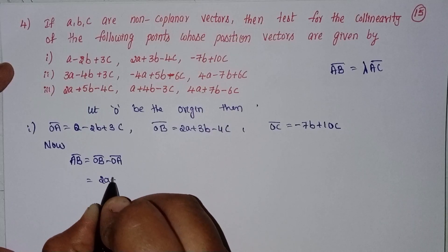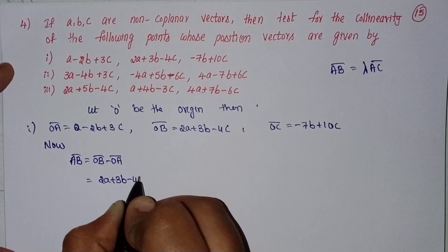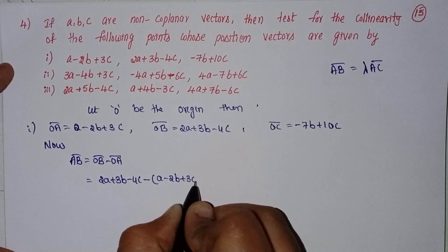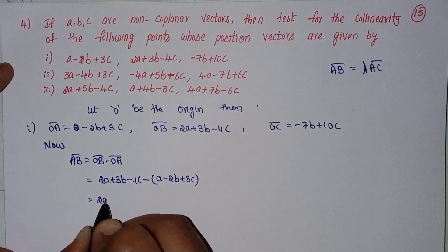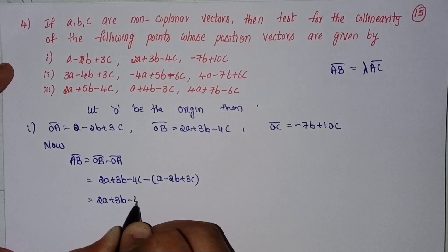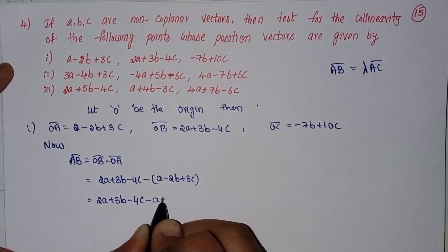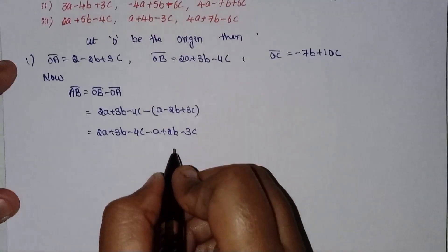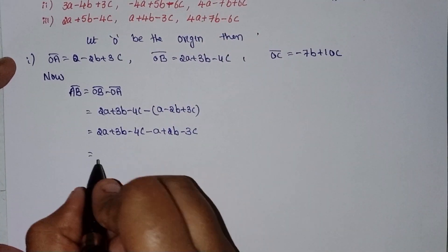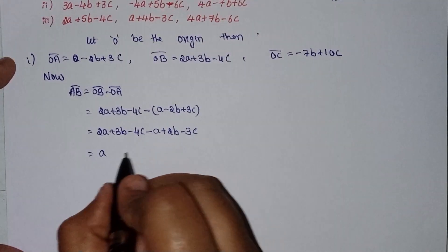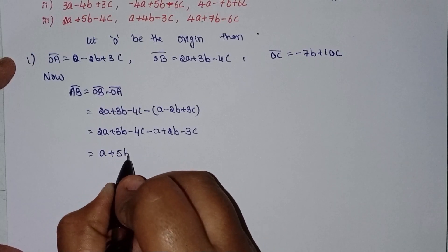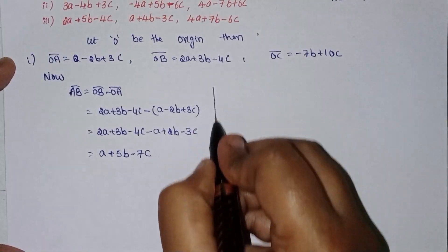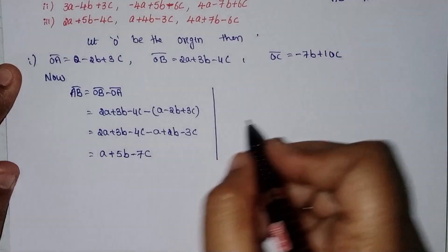AB equals OB minus OA: 2a plus 3b minus 4c, minus of (a minus 2b plus 3c), which gives 2a plus 3b minus 4c minus a plus 2b minus 3c. Simplifying: a plus 5b minus 7c. So AB equals a plus 5b minus 7c.